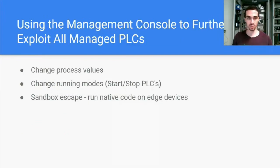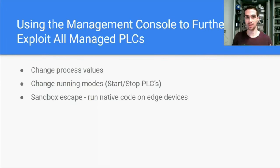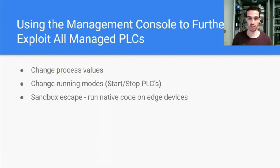Once we have access to the cloud, we can change running modes of the PLCs, stop them, or even change process values. But the holy grail of attacks is to actually run native code on the PLCs. This is not yet published so we can't speak about details here, but we actually managed to run native code on the WAGO PLCs from the cloud. So once we have the cloud credentials, we were able to execute code on all of the PLCs in the operation.